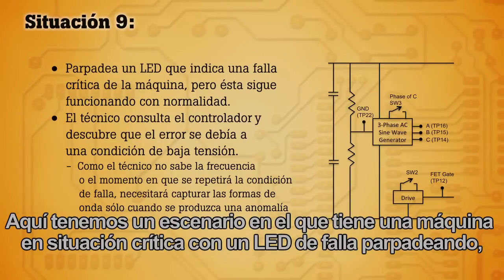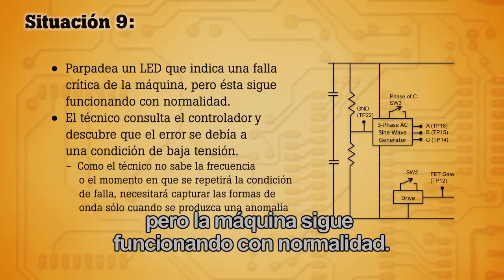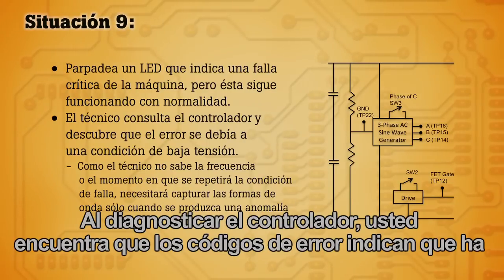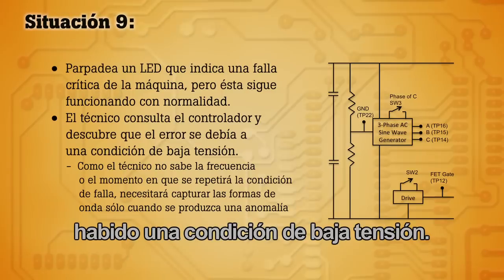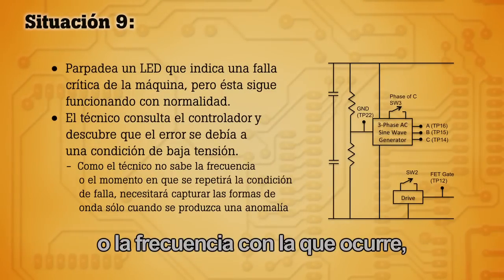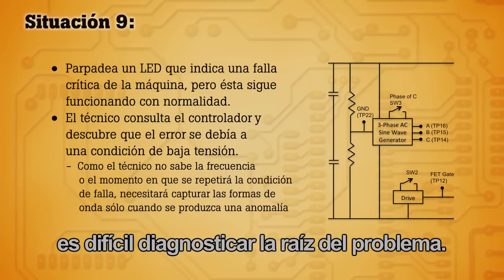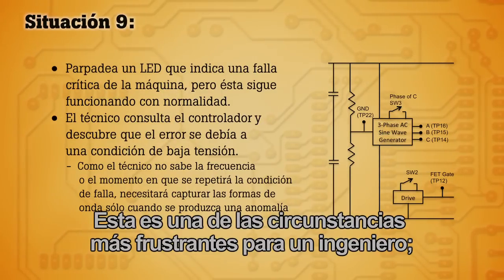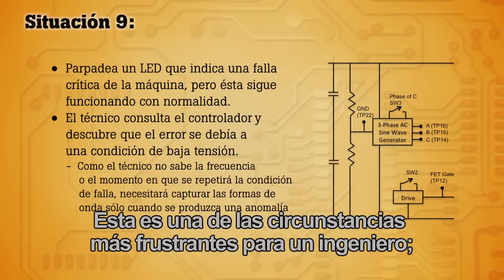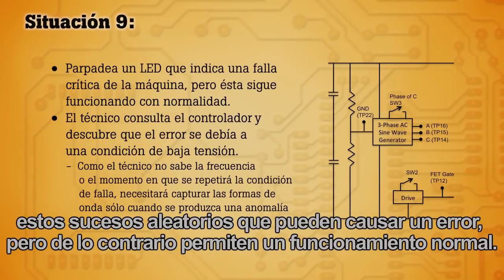Here we have a scenario where you have a critical machine with a fault LED flashing, but the machine is continuing to operate normally. Diagnosing the controller, you find the error codes indicate there has been a low voltage condition. Since you don't know when the fault occurred or how often it's happened, it's difficult to diagnose the root of the problem. This is one of the most frustrating circumstances for an engineer — these random events that cause an error but allow for otherwise normal operation.